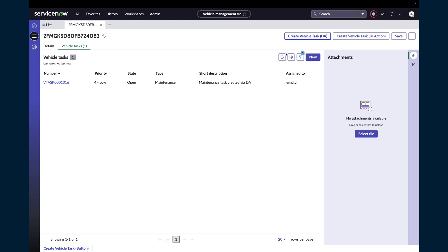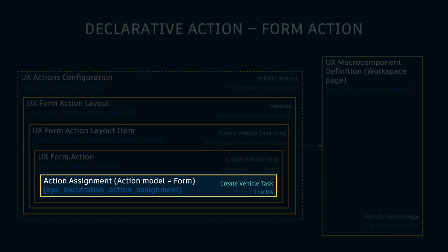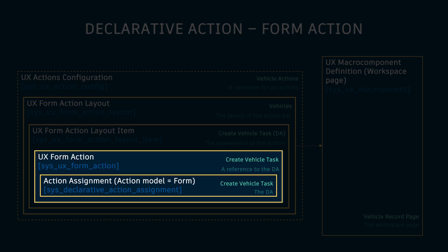In the next video, we're going to create a declarative action from scratch. But let's quickly review the components we're going to use. This image summarizes the main components. Our starting point will be the action assignment — this is what we call the declarative action, and it's one component of many that we need to create. I've given the table names for all components, because not all of these tables will have a module linking to them. When you create a UI Action and make it available in a configurable workspace, the system will automatically create a form action record for you — it's simply a reference to either a UI Action or a declarative action.